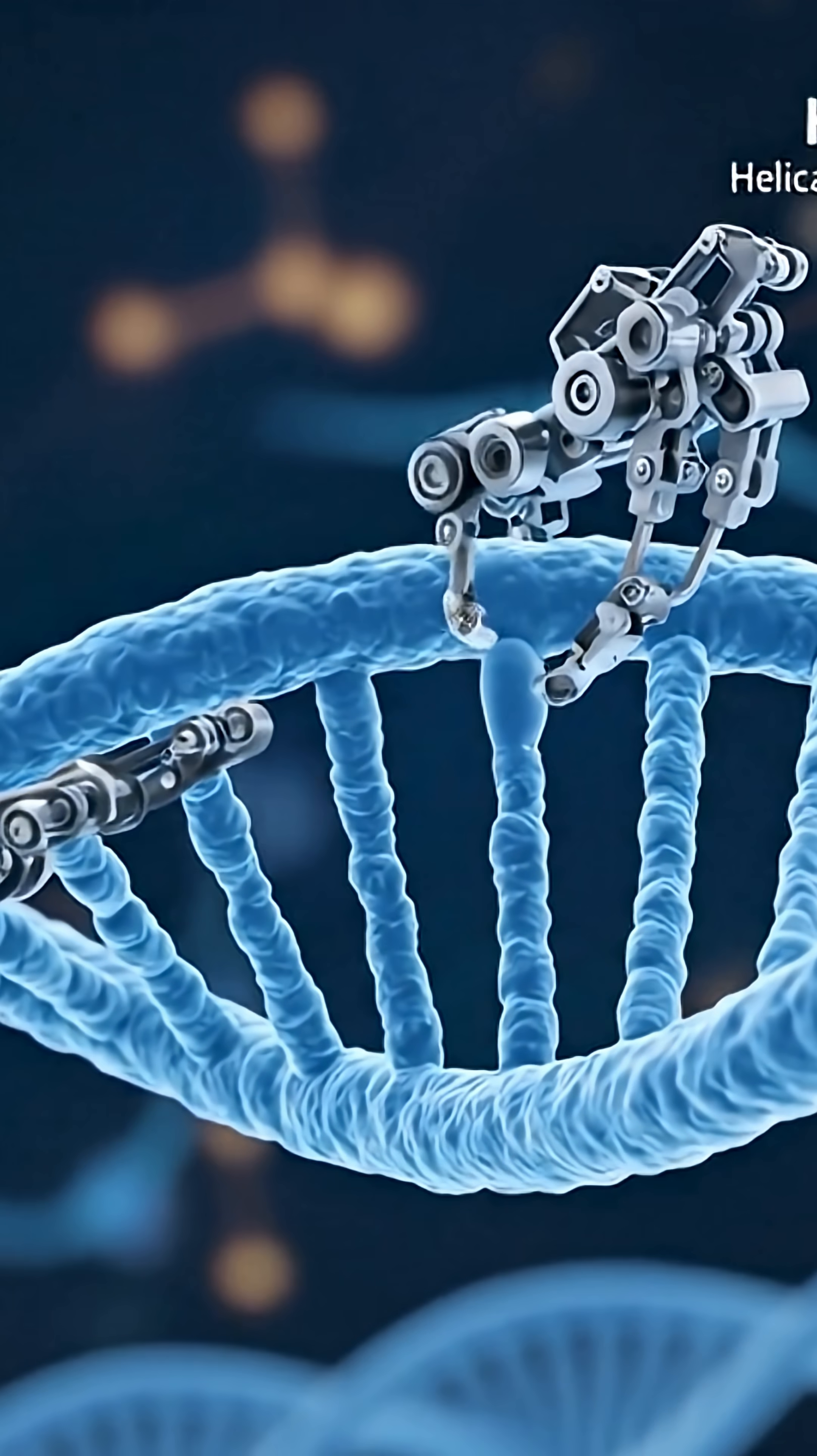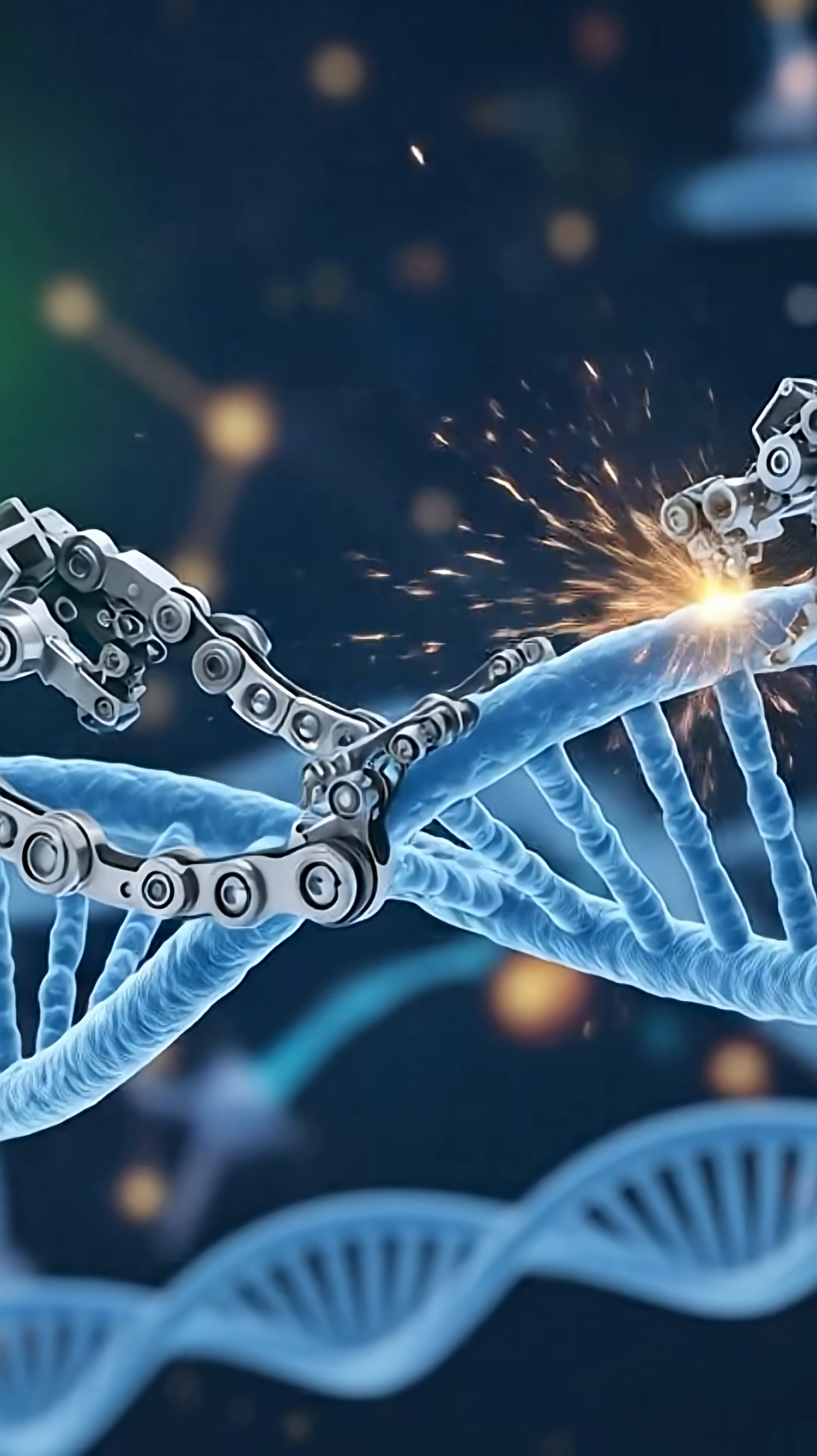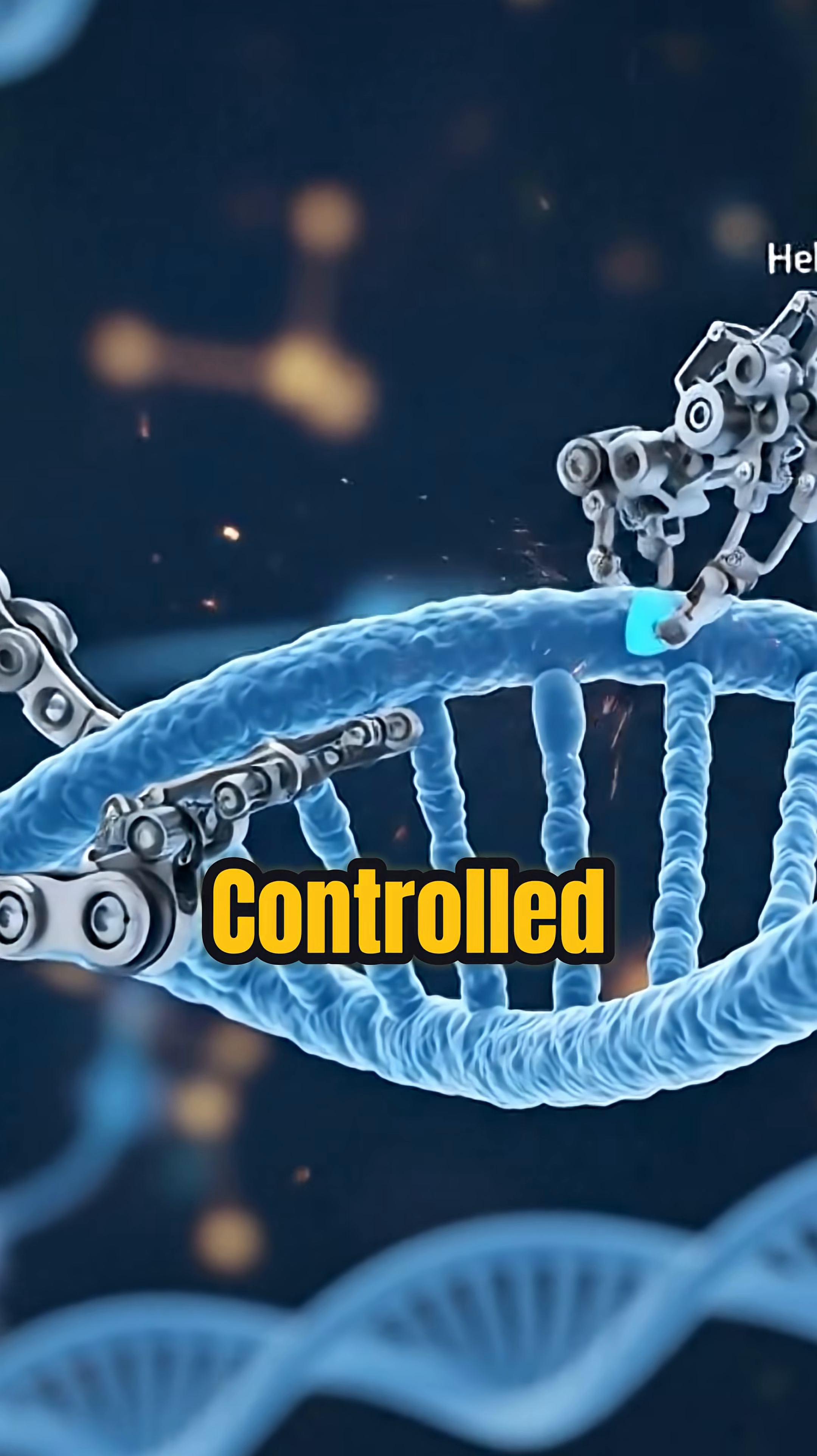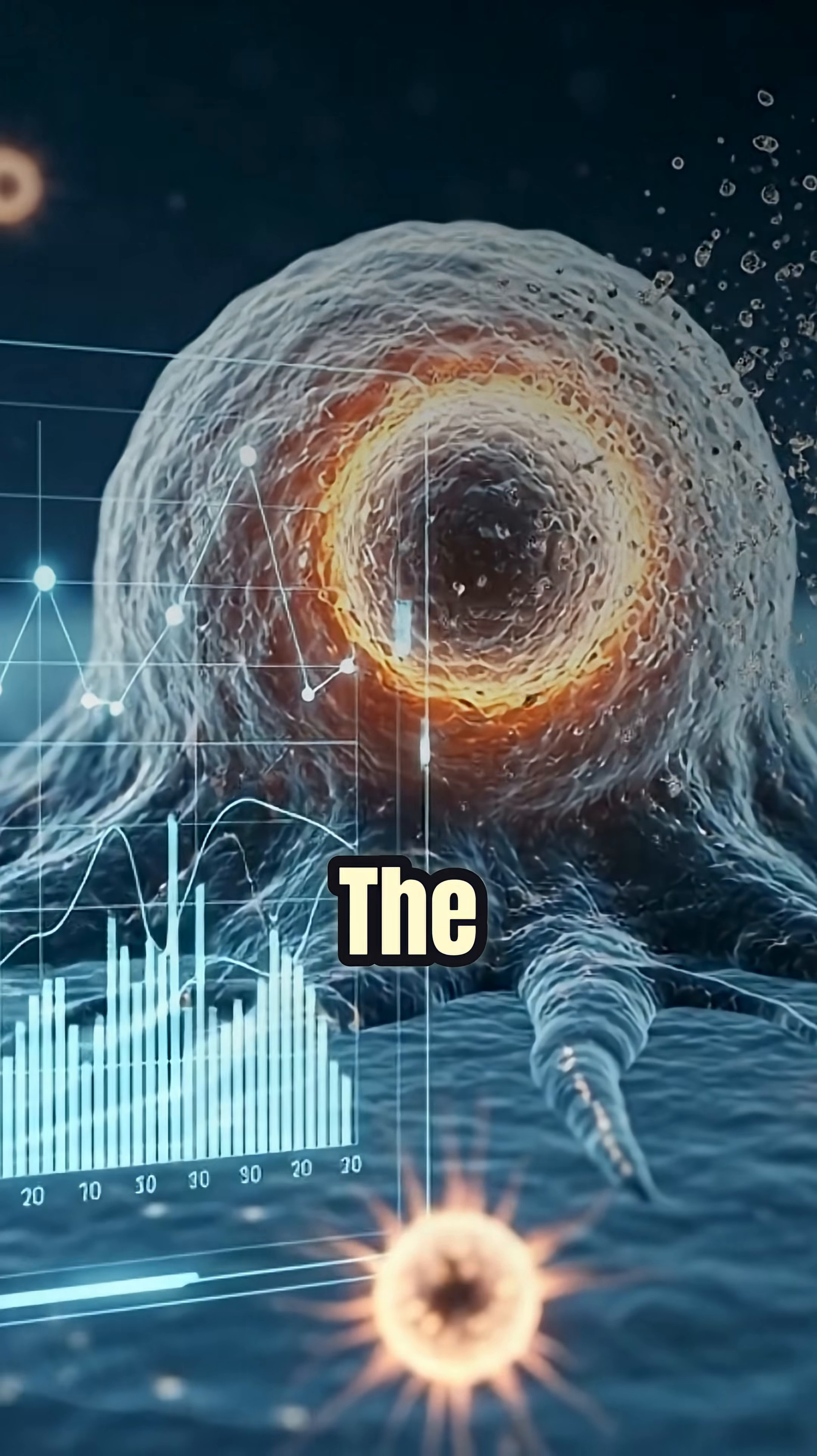CRISPR guides the tool to the exact gene. A helicase enzyme unzips the DNA. Then HACE introduces tiny controlled edits, like changing one letter in a book without disturbing the page.